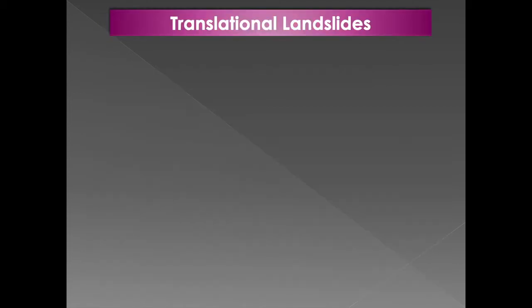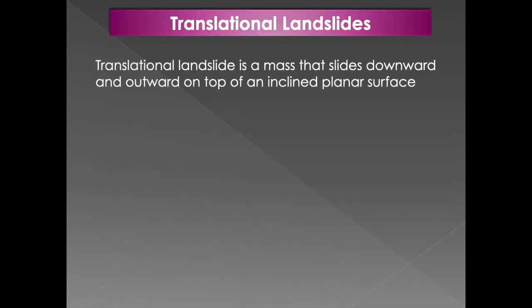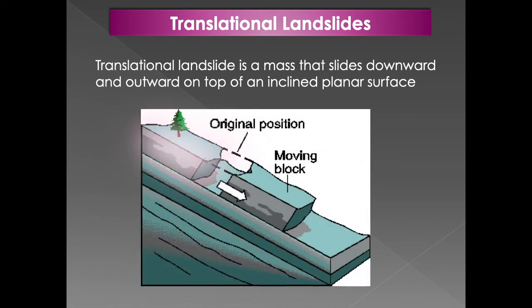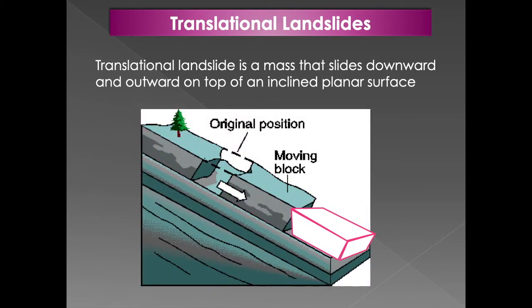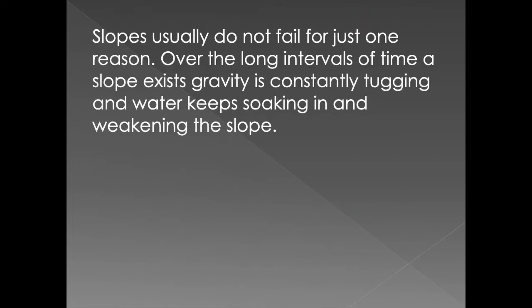Then we get translational landslides. These are the top of the ground where it loses its contact with the parent material. It slides down the slope. It can either break off as a block and slide down the slope — that's a translational landslide.